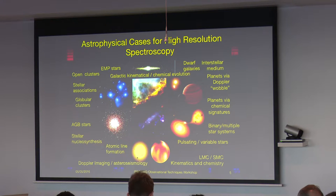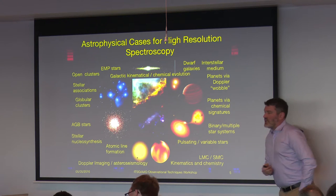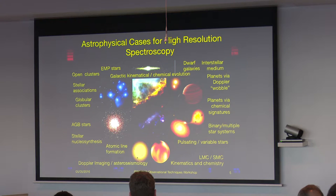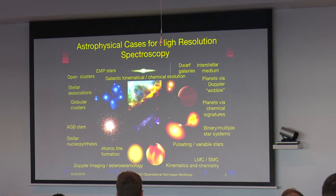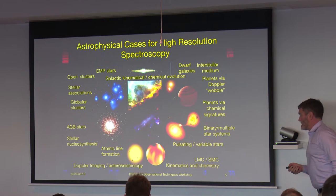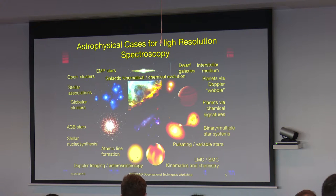Probing the interstellar medium - looking at the absorption features that are created as light from stars passes through the interstellar medium. The high velocity resolution enables us to find planets via their Doppler wobble, so looking at the reflex motion of stars, which again, if you have high precision radial velocities, you can do that. Finding potentially planets via chemical signatures - this is still somewhat controversial, but it has been proposed that stellar systems with planets have different chemical abundance patterns to stars that do not have planets. The radial velocity information tells us about binary or multiple stellar systems. Similarly, you can find out about pulsating variable stars by looking at how these stars are changing in terms of their radial velocity.